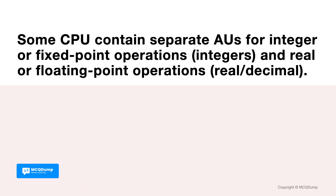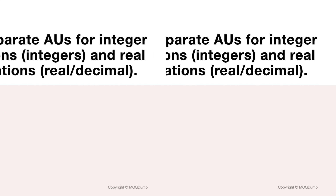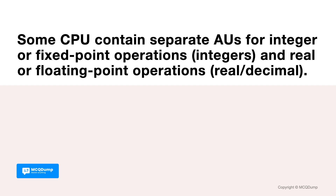Some CPUs contain separate AUs for integer or fixed-point operations (integers) and real or floating-point operations (real/decimal). True or false? It is true. Some CPUs contain separate AUs for integer or fixed-point operations and real or floating-point operations.